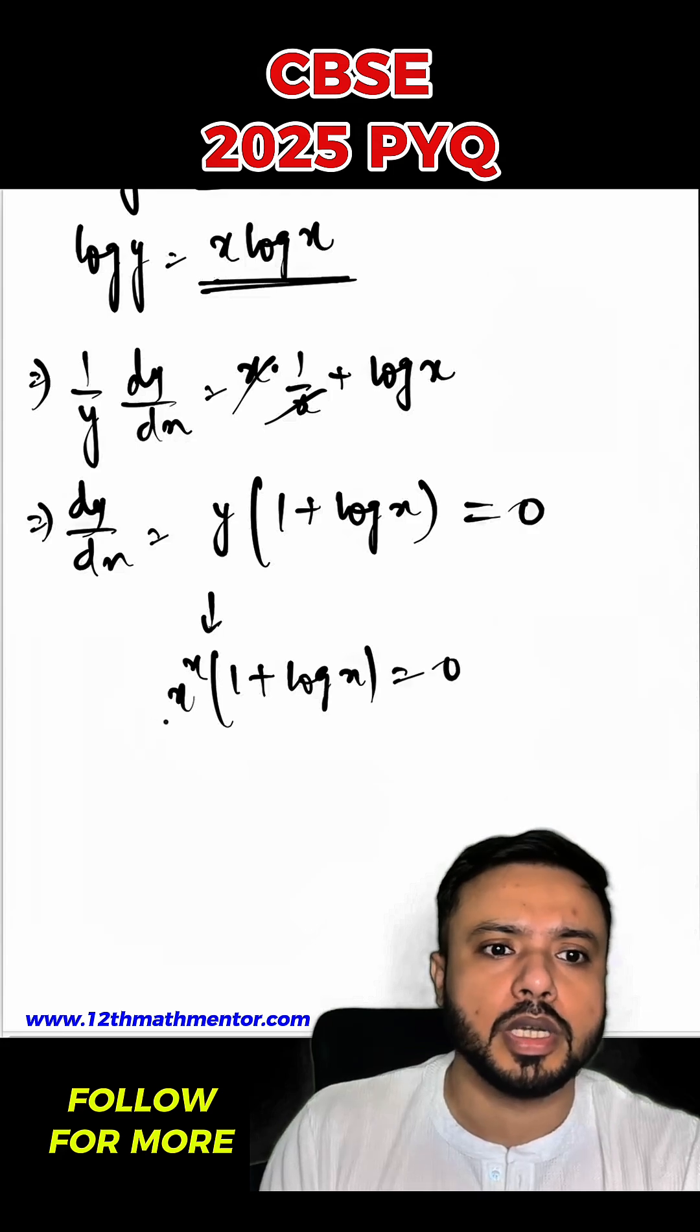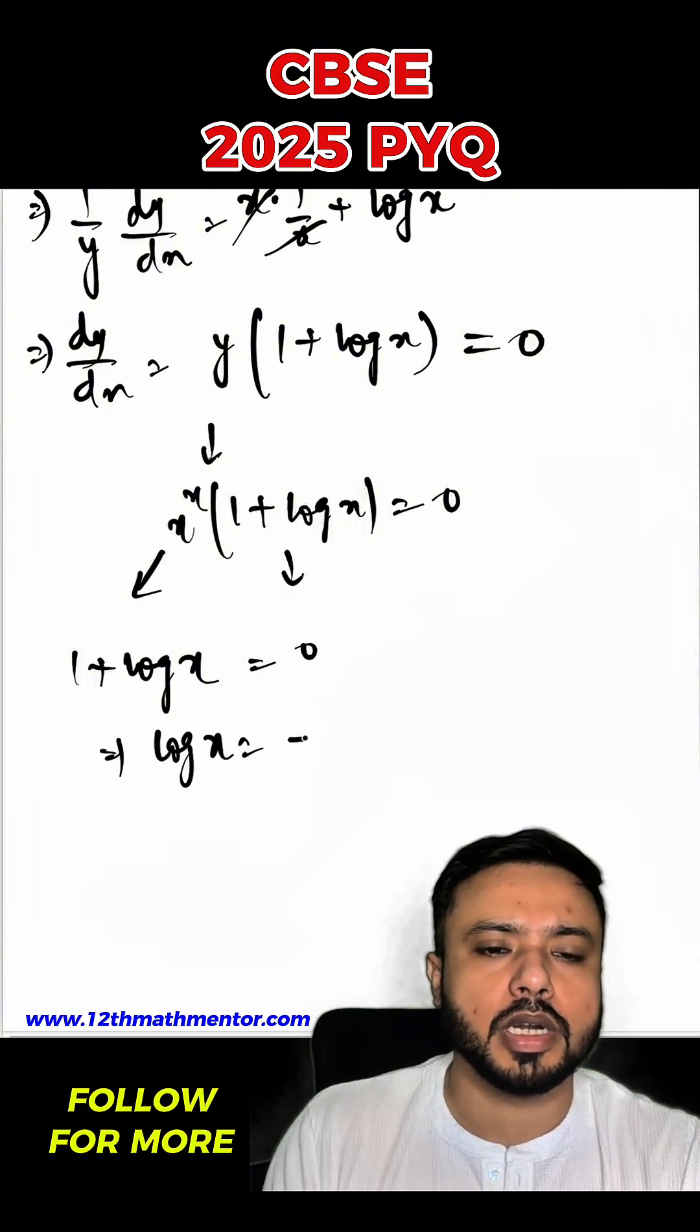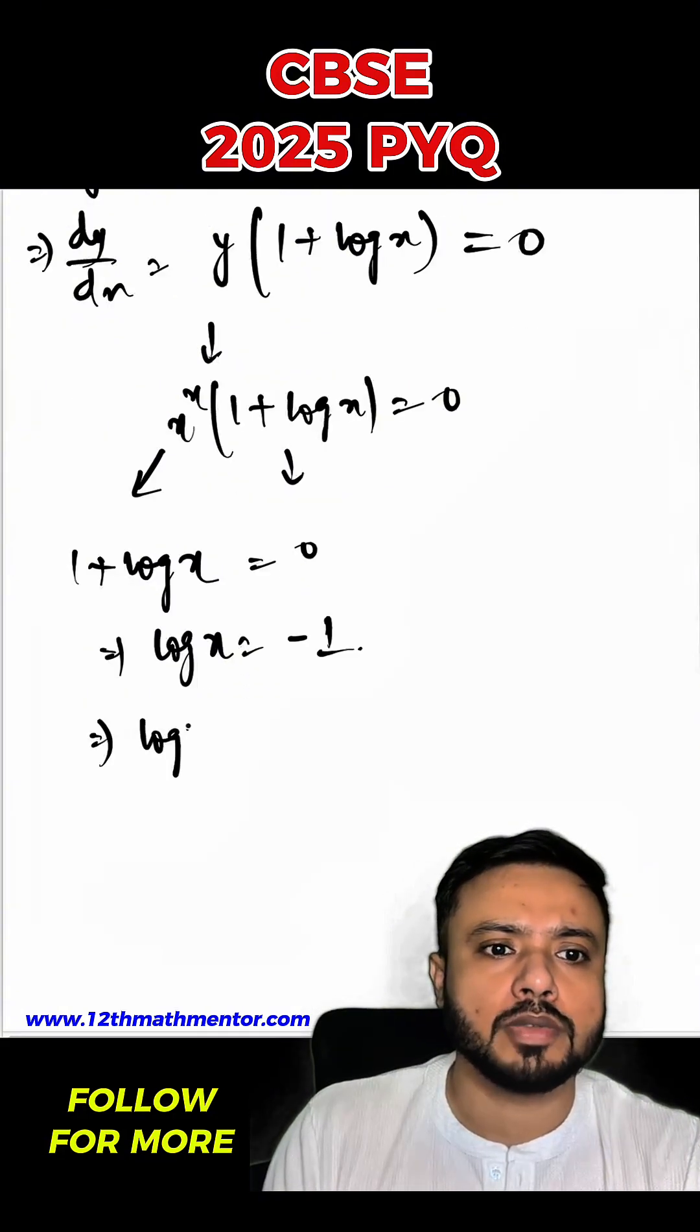Hence this equals zero and this equals zero when 1 plus log x is equal to zero. That means log x equals negative 1. So log x will be equal to negative of log e, because log e value is 1.